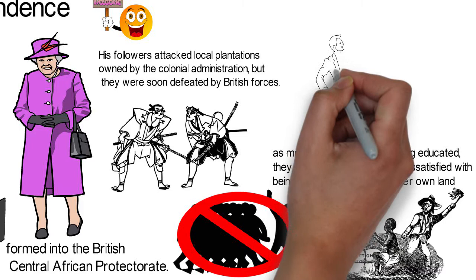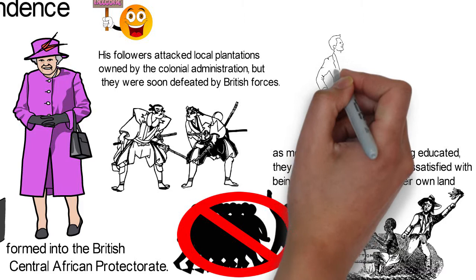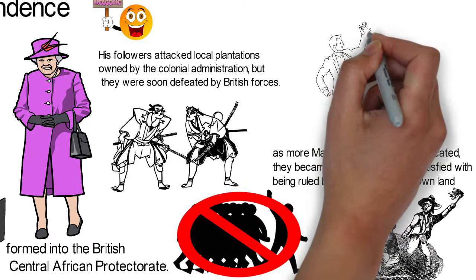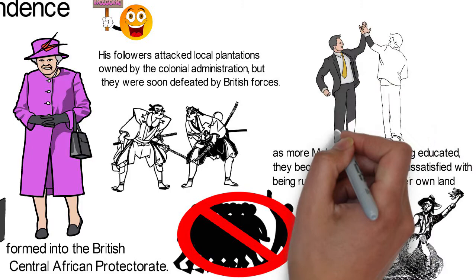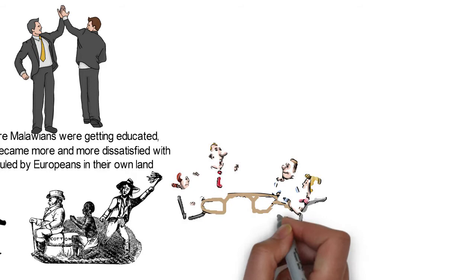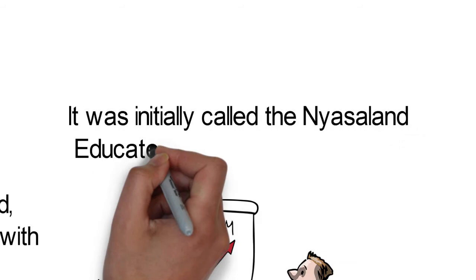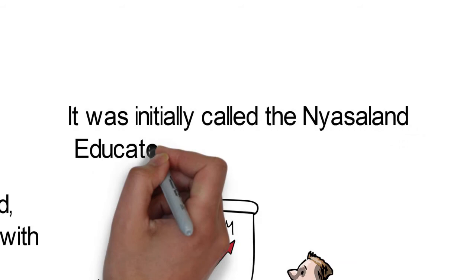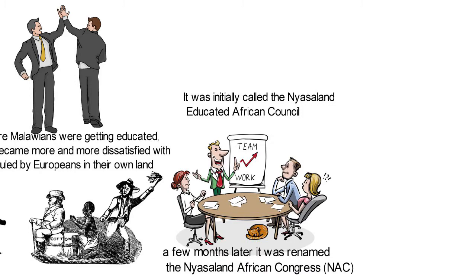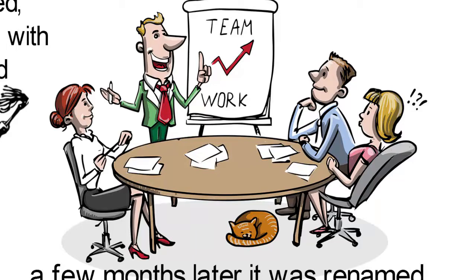By 1944, the Nyasa African Congress was established by the leaders of the Nyasaland native associations, with Mumba and James Frederick Sangala as some of its prominent leaders. The NAC was the first organization that attempted to work at a national level in Malawi, intended to be an umbrella organization coordinating native associations and other local organizations in the protectorate of Nyasaland. It was initially called the Nyasaland Educated African Council, but a few months later it was renamed the Nyasaland African Congress at the urging of Sangala, who insisted the movement should be all-embracing and not restricted to the educated elites.